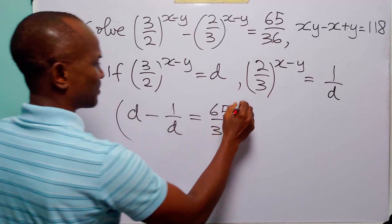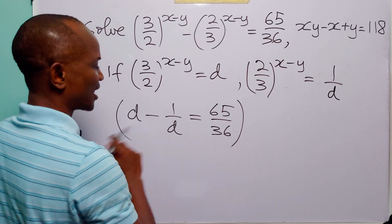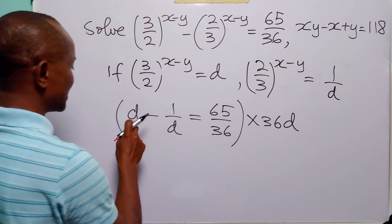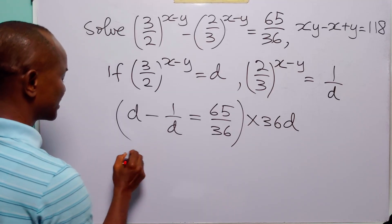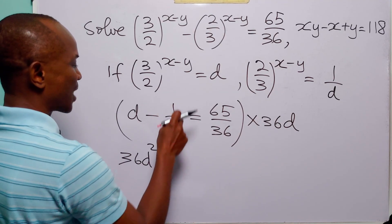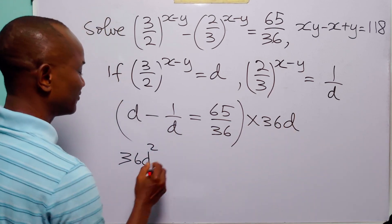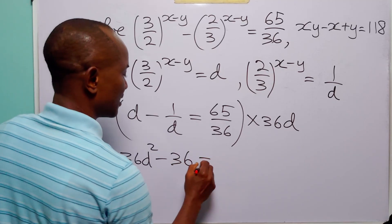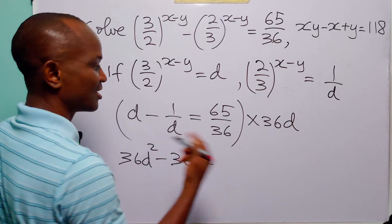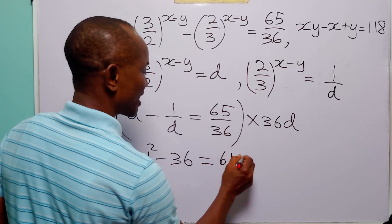Now let us multiply through this equation by 36d to get rid of these two fractions. So here we have times 36d: d times 36d is equal to 36d squared. Minus 1 over d times 36d — of course d is going to cancel, leaving us with minus 36. And 65 over 36 multiplied by 36d — 36 is going to cancel, leaving us with 65d.